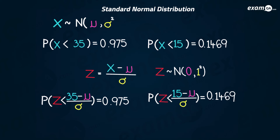The probability values don't change: the first is equal to 0.975 and the second stays as 0.1469. We do the inverse norm of each. The inverse norm of 0.975 gives (35 − μ) / σ = 1.96, and the inverse norm of 0.1469 gives (15 − μ) / σ = −1.05.